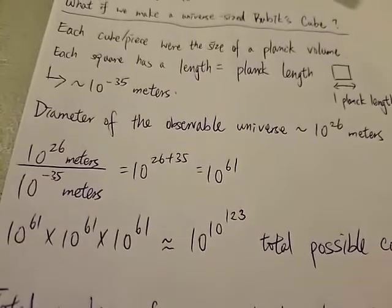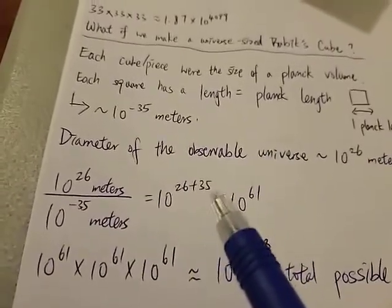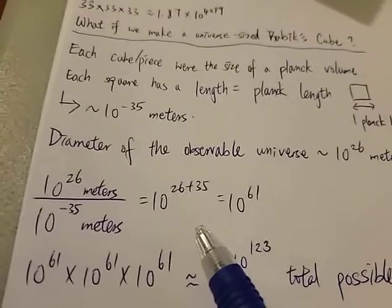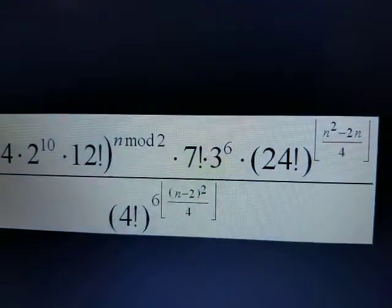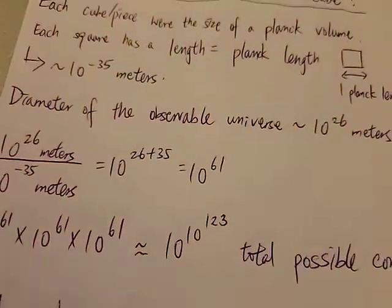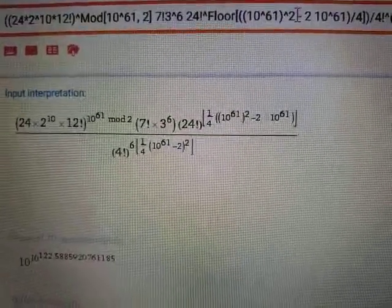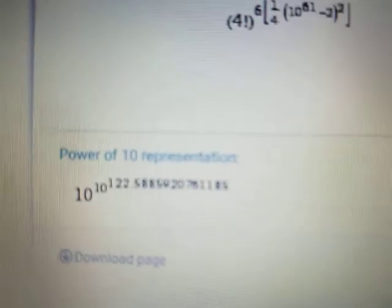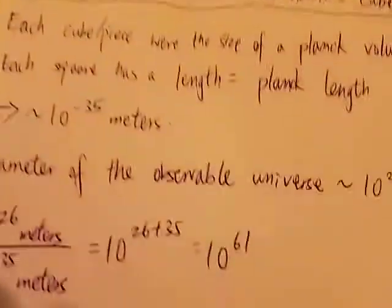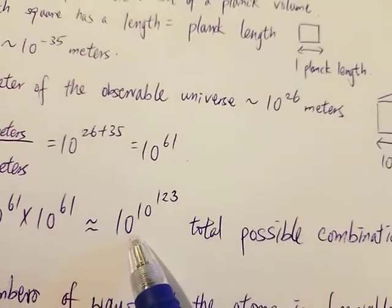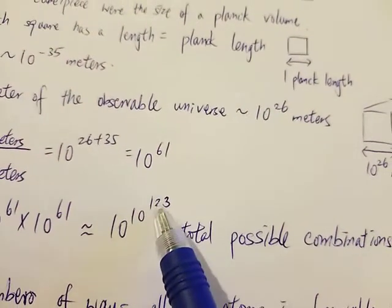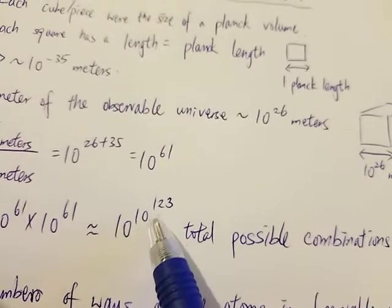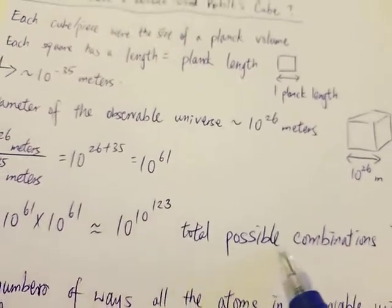And how many total possible ways to arrange this Rubik's cube? Again, we use this formula over here. It's 10 to the power of 61. All I have to do is plug in 10 to the 61 in it. And the result is here. The result is staggering: 10 to the power of 10 to the power of 123. So this is 10 to the 10 to the 123 total possible combinations.